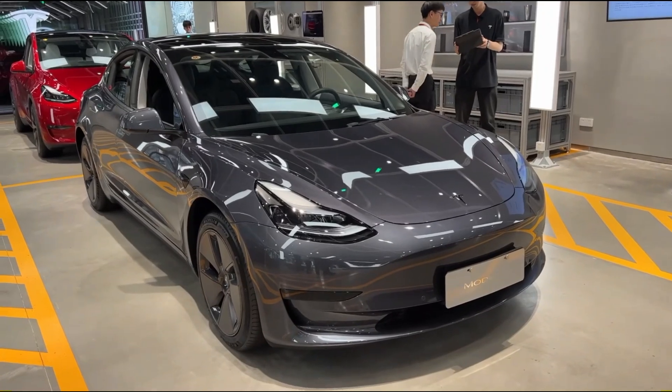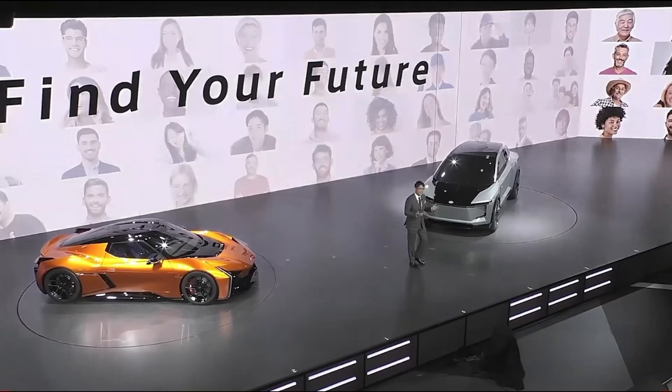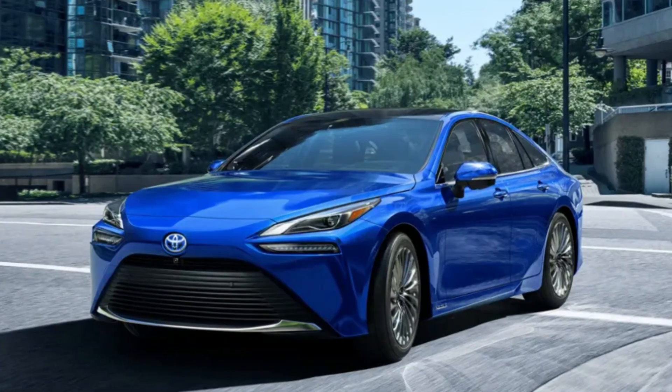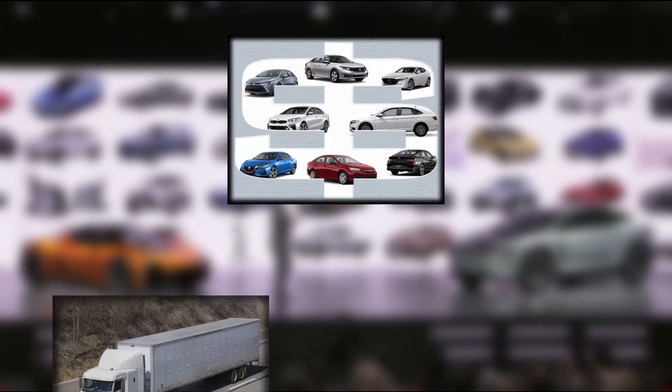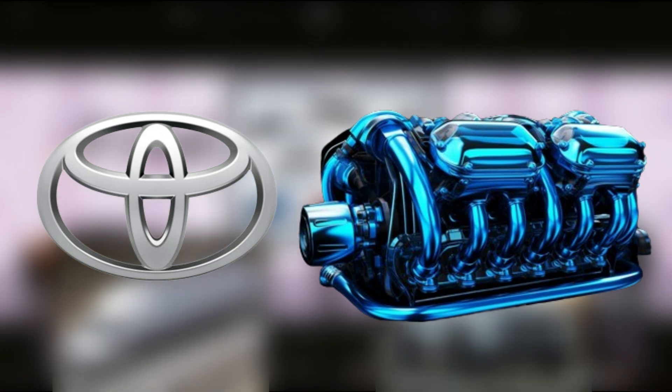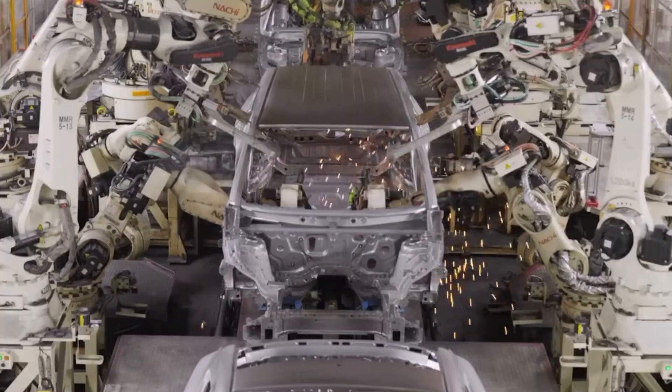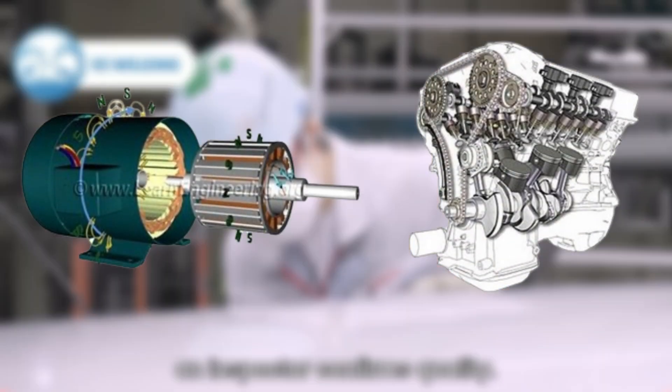Versatility Across Vehicle Segments: Unlike traditional electric vehicles limited to certain vehicle segments, Toyota's water engine technology can be adapted across a wide range of vehicles. From compact cars to trucks and SUVs, this versatile engine can power various vehicle types. This flexibility presents a significant opportunity for Toyota to capture a larger market share and compete directly with both electric and internal combustion engine vehicles.